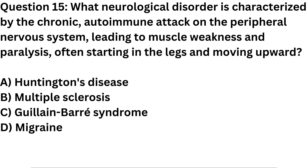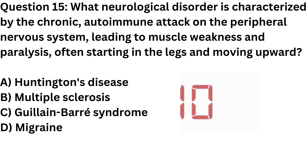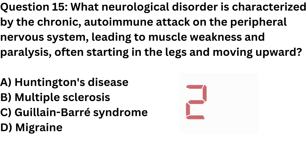Question 15. What neurological disorder is characterized by the chronic, autoimmune attack on the peripheral nervous system, leading to muscle weakness and paralysis, often starting in the legs and moving upward? a. Huntington's disease. b. Multiple sclerosis. c. Guillain-Barré syndrome. d. Migraine. Correct answer: c. Guillain-Barré syndrome.